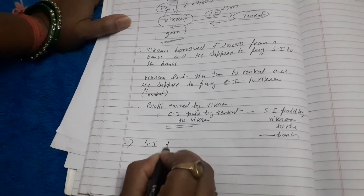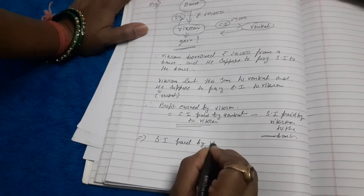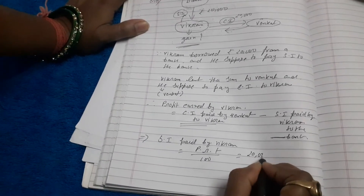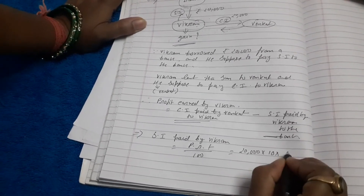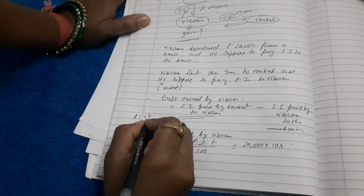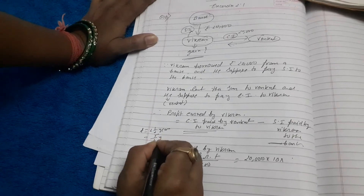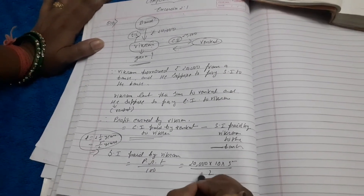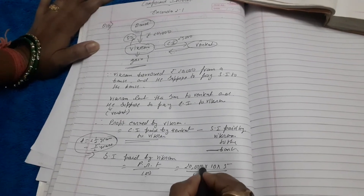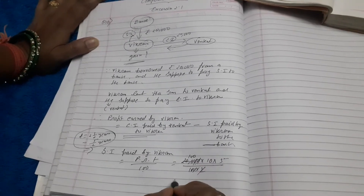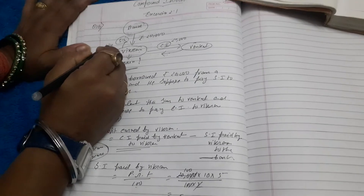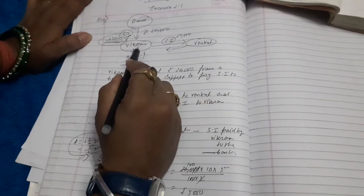First part: Simple interest paid by Vikram. SI = P × R × T / 100. Principal P = 20,000, rate R = 10%, and time T = 2 and a half years = 5/2 years. So SI = 20,000 × 10 × (5/2) / 100 = 5,000. Vikram will pay the bank rupees 5,000.